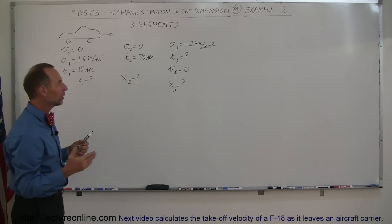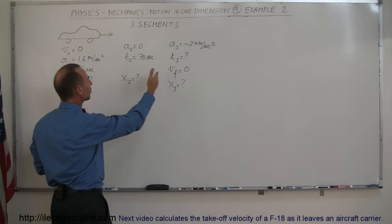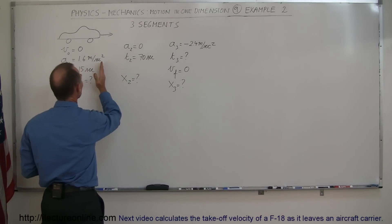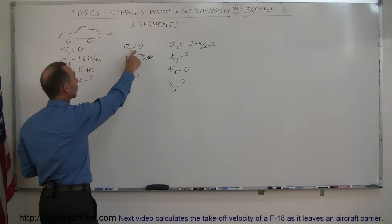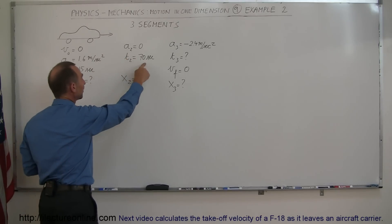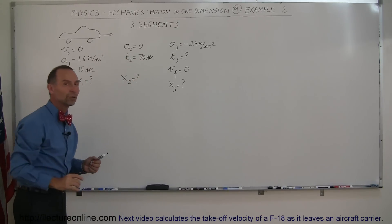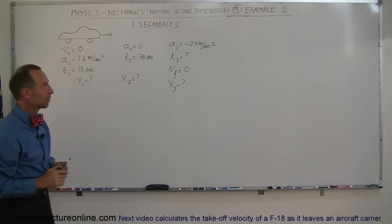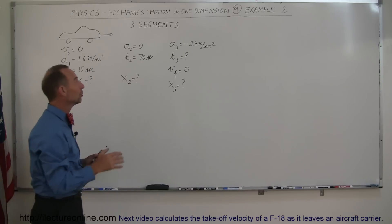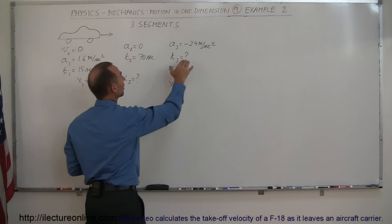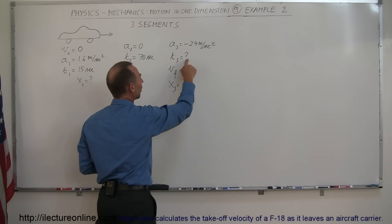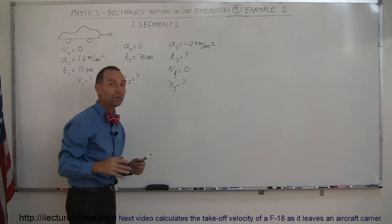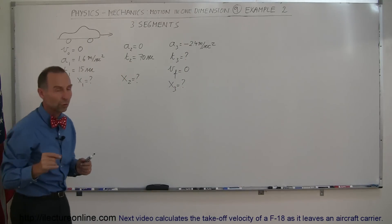I'm going to call this a three-segment problem. The first segment is the initial acceleration of the car, then the acceleration goes to zero for 70 seconds — how far does it travel during that second segment? And finally, during the third segment, the acceleration is negative so it's slowing down. The final velocity is zero. How long did it take and how far did it travel during that third segment?